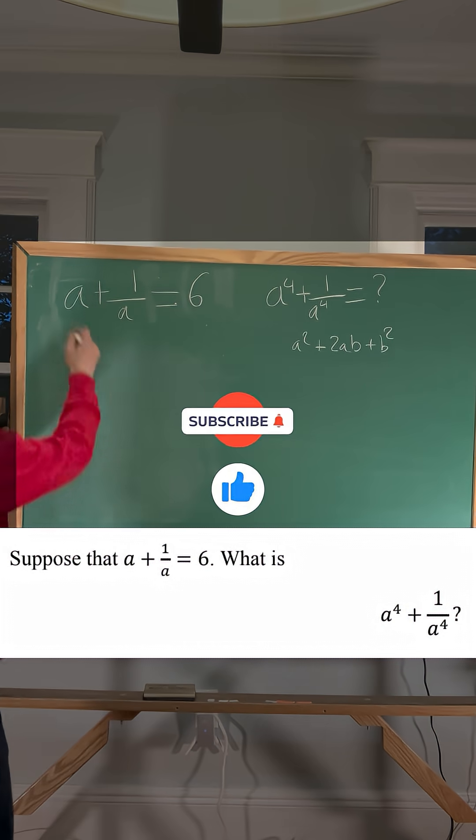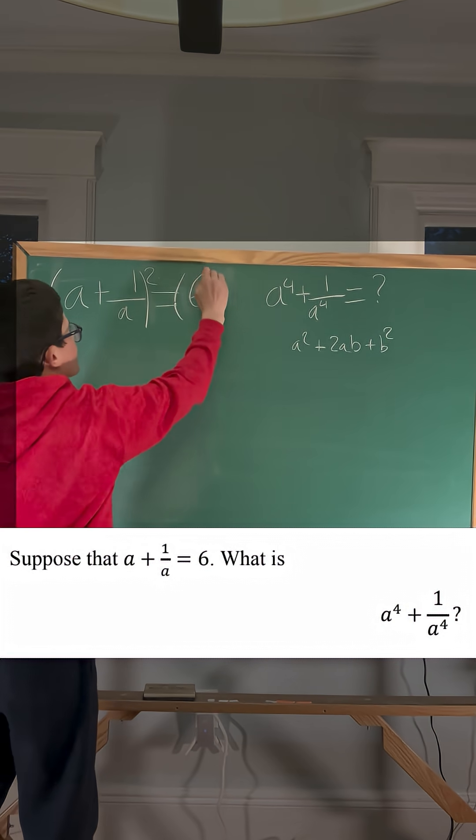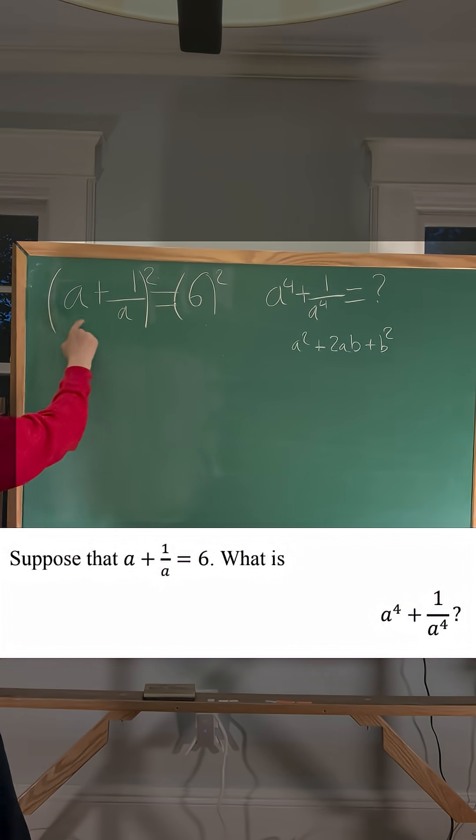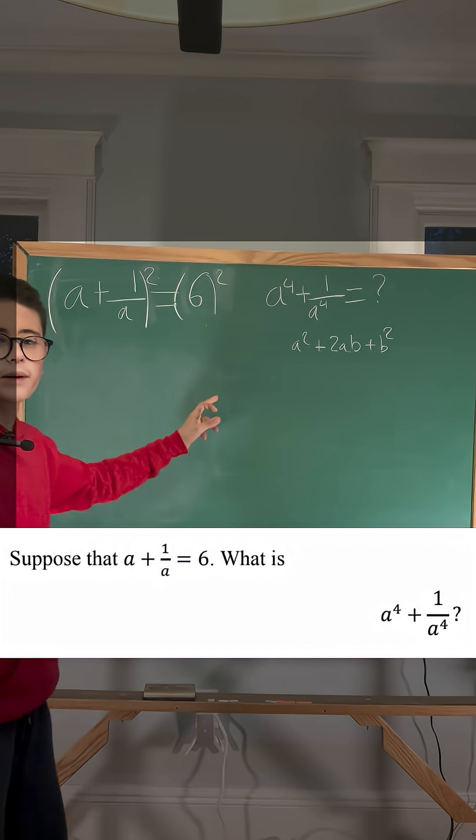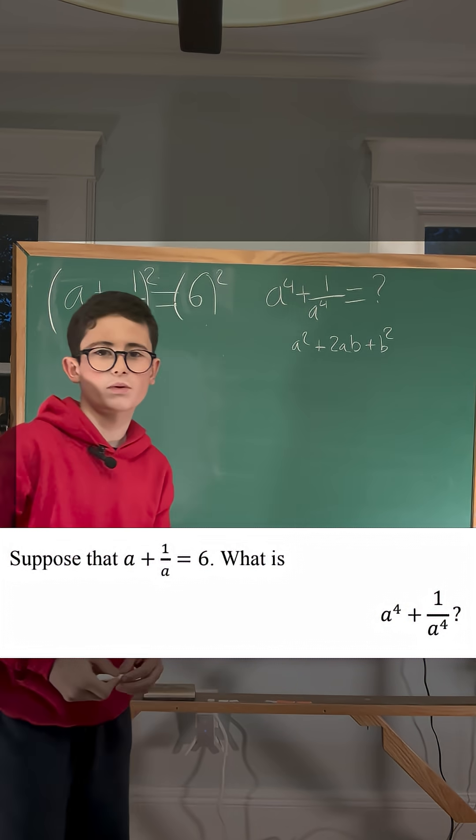We're going to start by squaring both sides of this equation. This form, a plus b squared, we could transform it into a squared plus 2ab plus b squared.